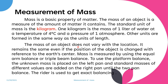The mass of an object does not vary with location — it remains the same even if the position of the object is changed with reference to the Earth's center. Mass is measured using an equal-arm balance or triple beam balance. To use the platform balance, the unknown mass is placed on the left pan, and standard masses of different values are added to the right pan until the two pans balance. A rider is used to get exact balancing.